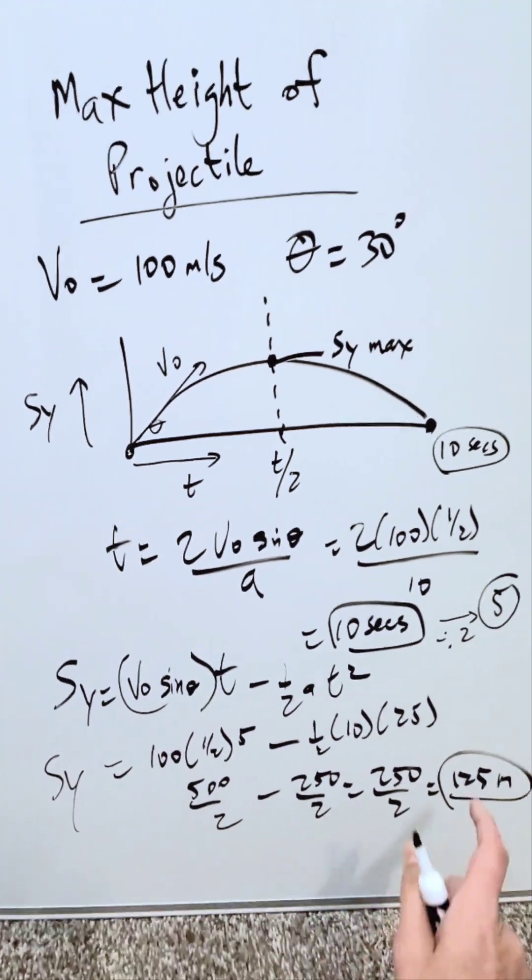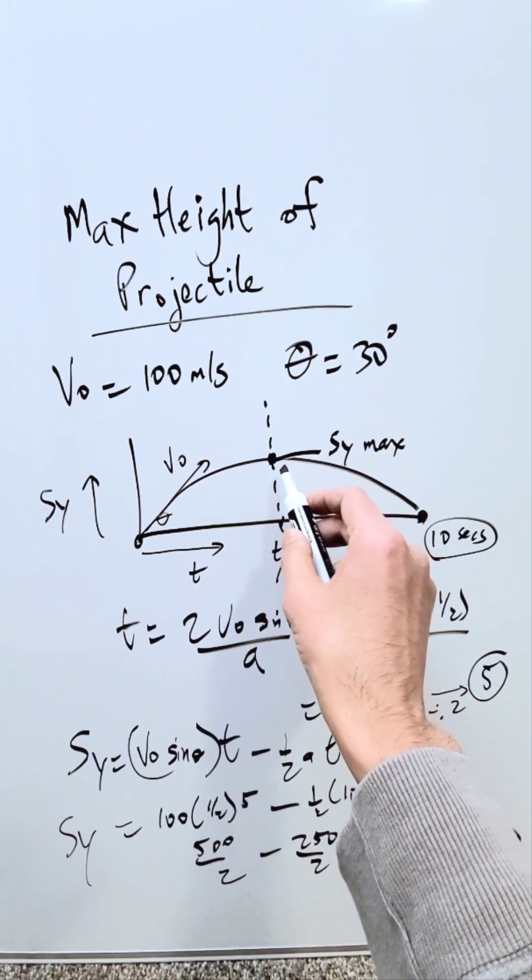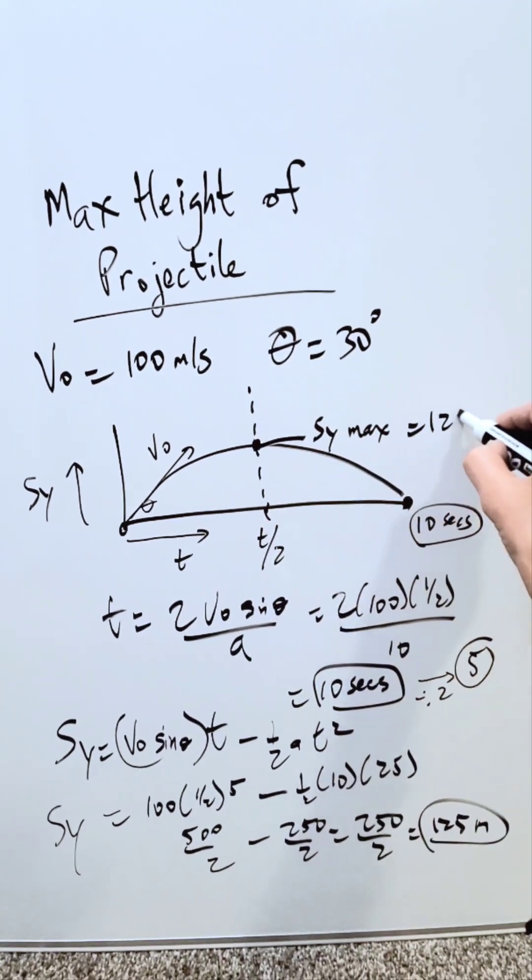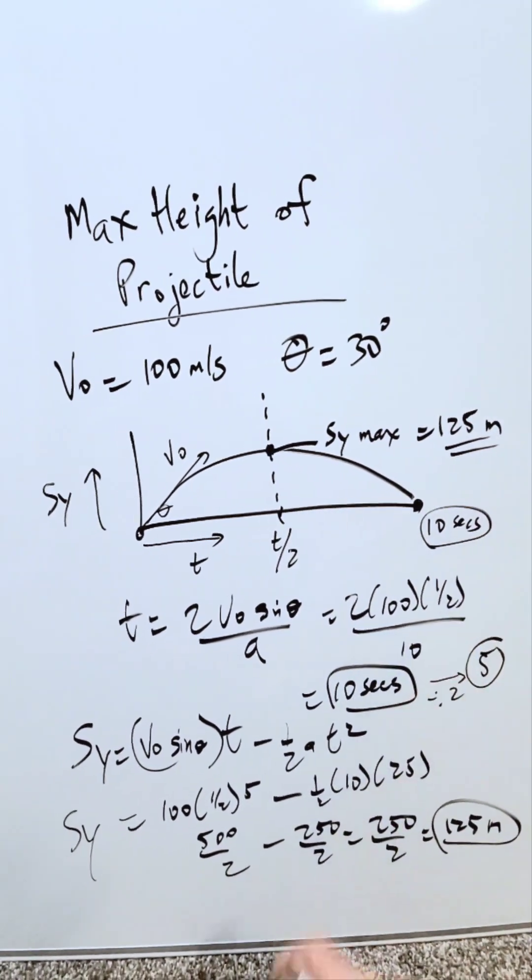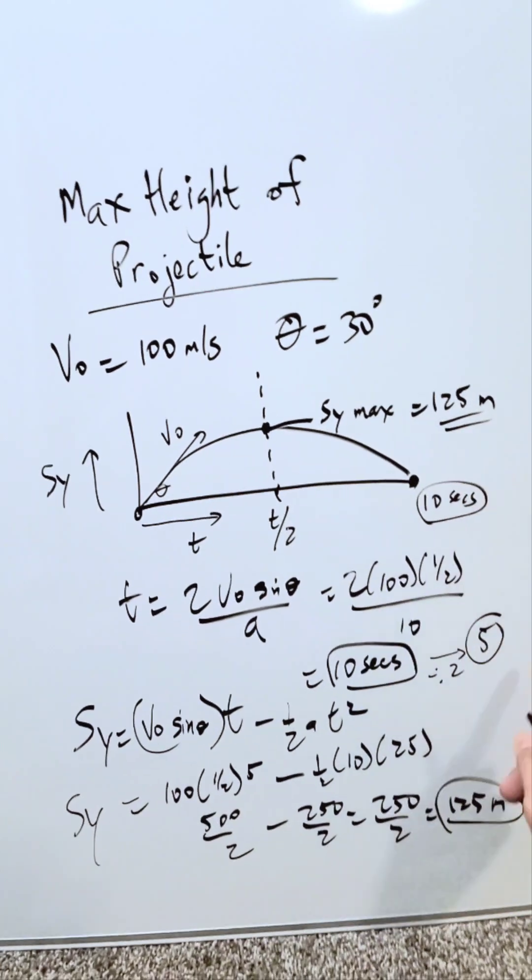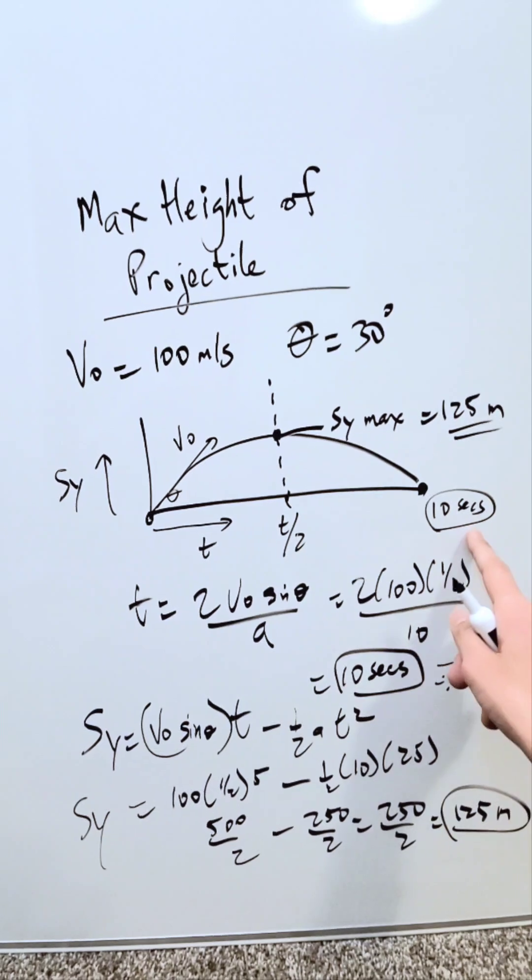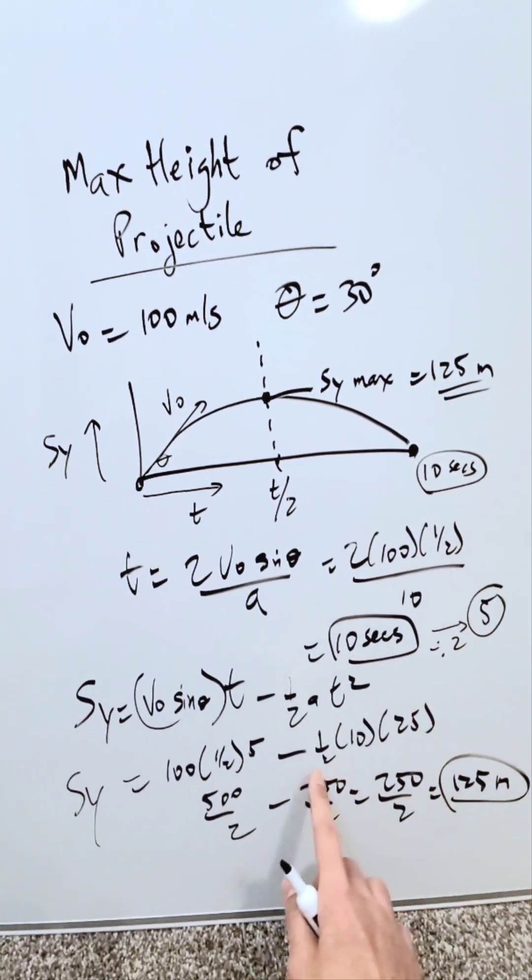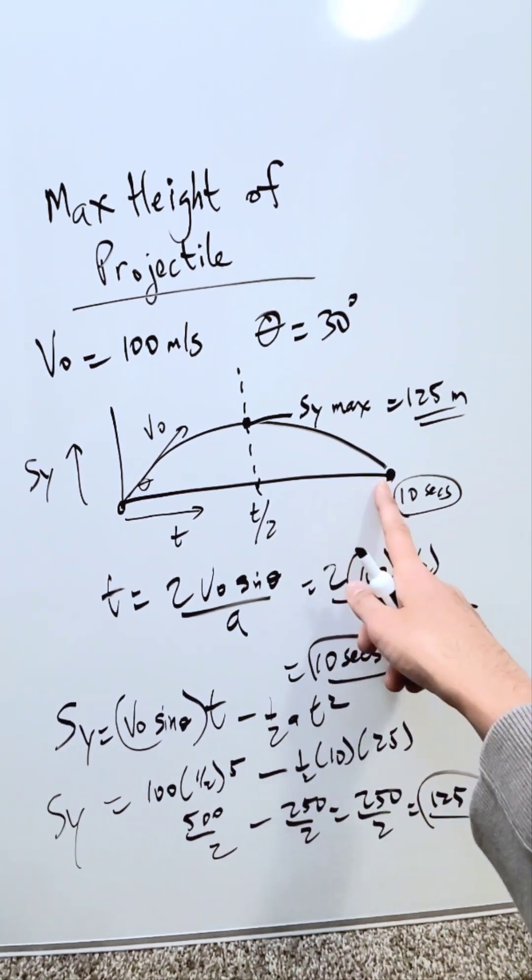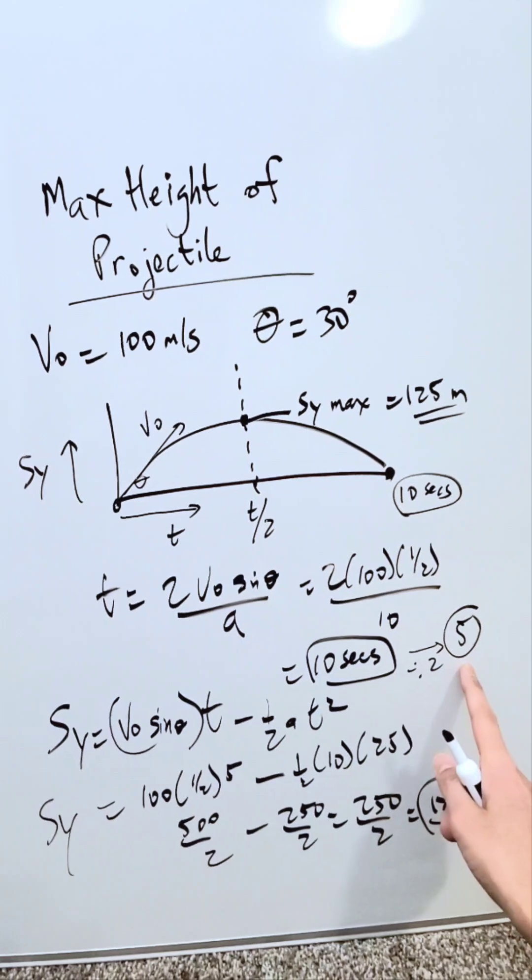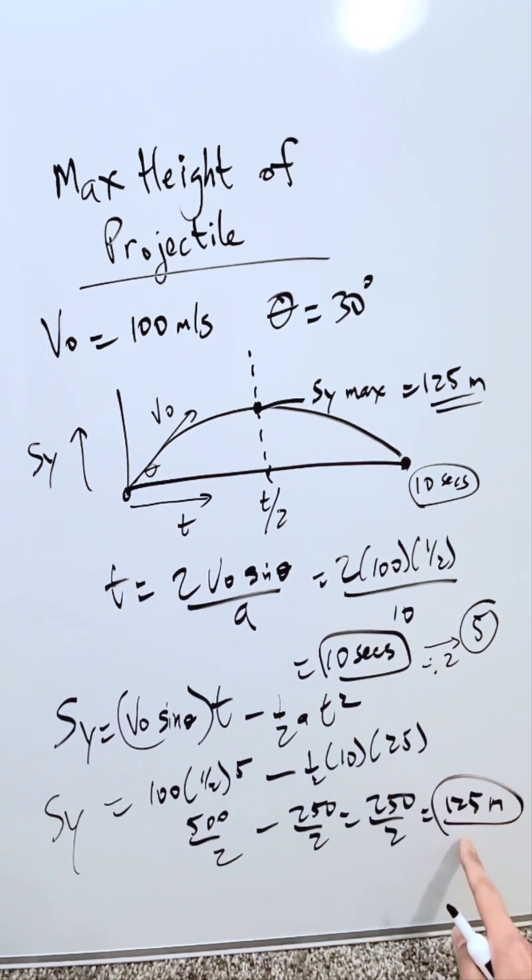This here is giving you your vertical component of displacement. What's the maximum height achieved by this projectile? It will be 125 meters, and this here would be the correct answer. Keep in mind, the time evaluated here is your midpoint, not your endpoint. If you were to run this right here, your displacement value will be 0 because your object has landed. You use the midway point, and that gives you your correct answer.